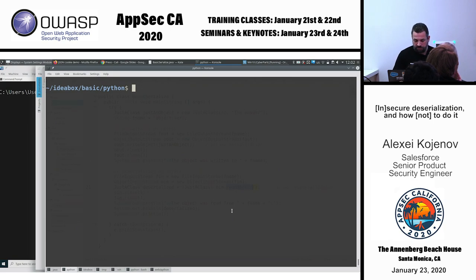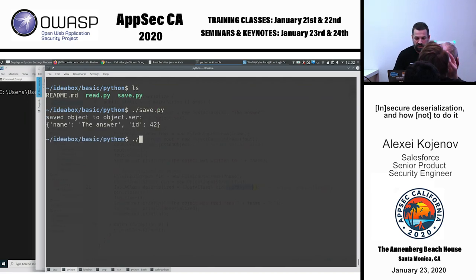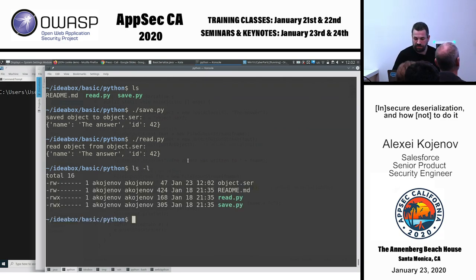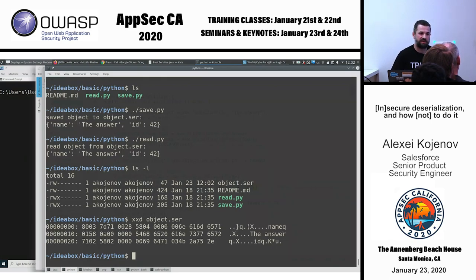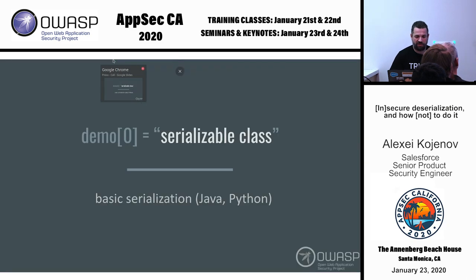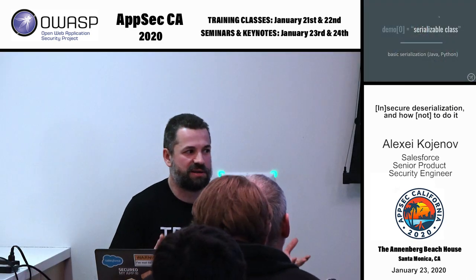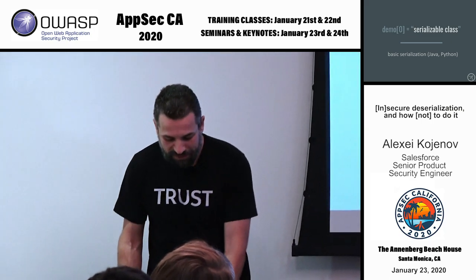Let's take a look at Python. I have two programs — one saves an object to a file, another reads it back, and the output is the same. The object was written to object.ser. If you look at it, it's not Java — it's different — but also some kind of binary format. Very similarly, we have some plain text data here, so it doesn't really hide anything. You can actually unpack it yourself. You might think that serialized data is some kind of hidden, encrypted, or encoded thing, but not much.